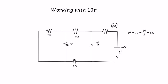The total current moving from the 10 volt source will be the same current moving through i2. The Norton's current 2 is therefore 10 over 2, which gives you 5 amps.